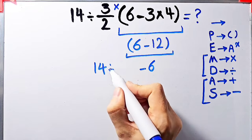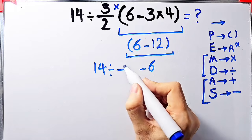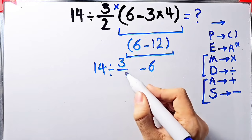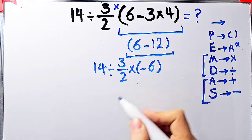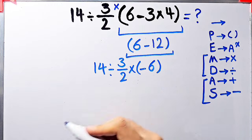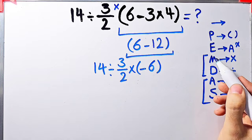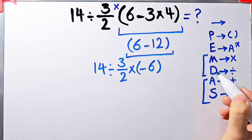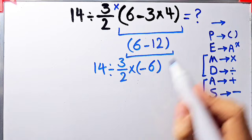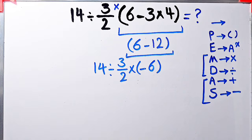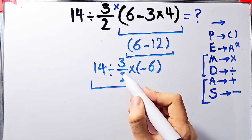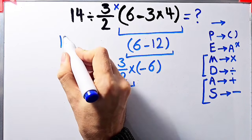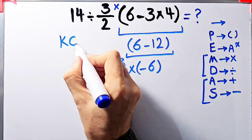Now the question is 14 divided by 3 over 2, then times negative 6. In this step, we have division and multiplication. Because multiplication and division have the same level of priority, we start from the left and simplify the question. 14 divided by 3 over 2 — to solve this part, we need to follow the KCF rule.